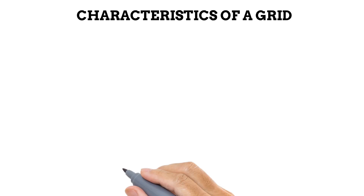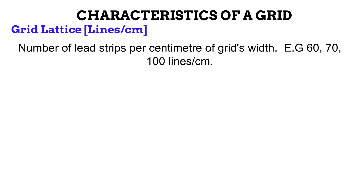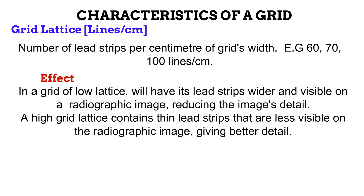Next is the grid lattice or grid frequency, measured in lines per centimeter or lines per inch. The grid lattice is the number of lead strips present in each centimeter of the grid's width. You can have a grid lattice of 60 lines per centimeter, implying 60 lead strips per centimeter, and some are as high as 100 lines per centimeter. A grid of low lattice — that is, a grid with fewer lead strips — produces an image with reduced recorded detail, because low lattice grids usually have wider lead strips, which are more visible on a radiographic image.